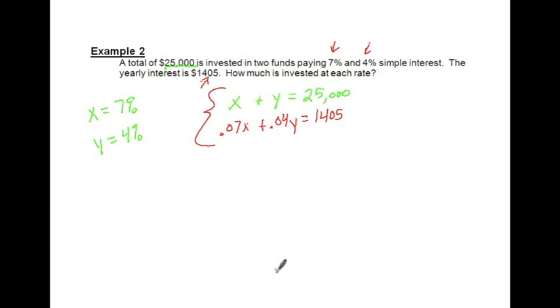So for the X, the 7%, and you always want to put the percent in decimal form. And for the Y, it was 4%. And how much money did we make all together? $1,405. So right here is your system of equations. If we go through the steps in solving that, just like what we did before, we can come up with our two different amounts. I'm going to take this first equation, X plus Y equals $25,000.